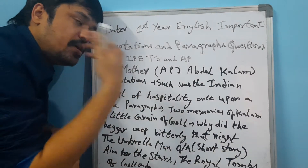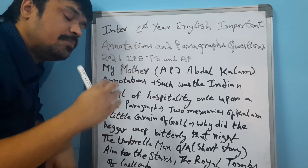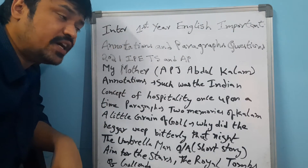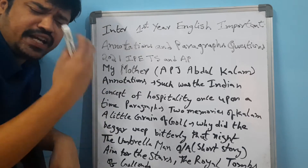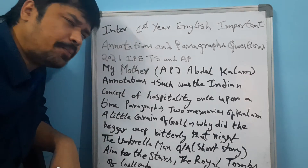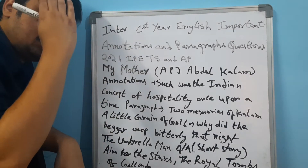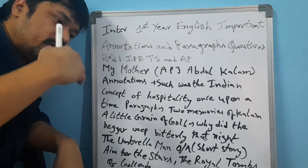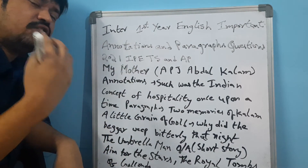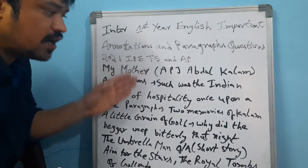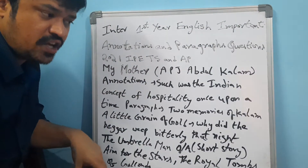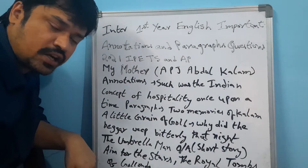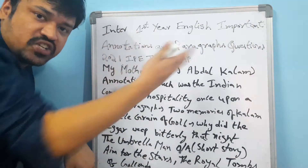If you understand the meaning of the paragraph and the annotations, it will be very easy to write the English paper in the public examination. You have to understand the meaning and always try to practice in the notebook regarding these annotations and paragraphs. If you don't understand, you can consult your teacher or find information from other resources.